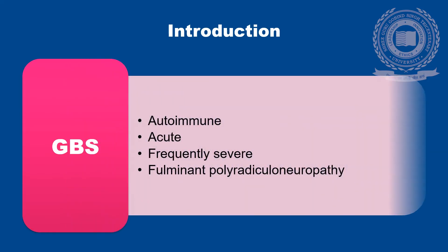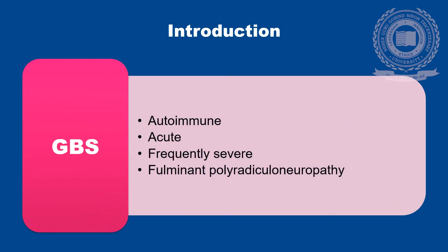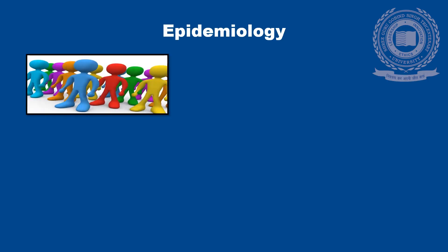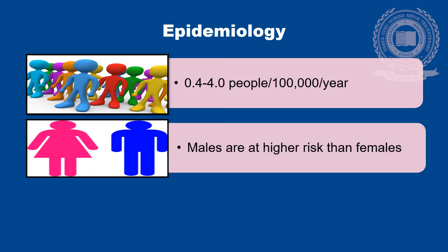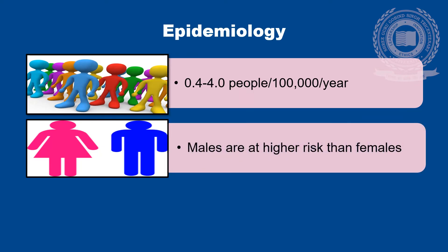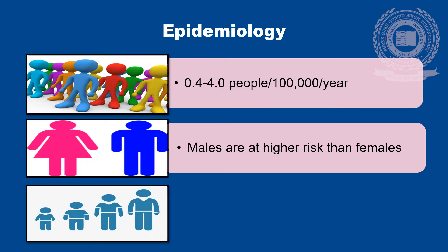Gulenbady Syndrome is an acute, frequently severe, fulminant polyradiculoneuropathy that is autoimmune in nature. The prevalence of Gulenbady Syndrome, according to data published by the World Health Organization, is 0.4 to 4 people per 1 lakh per year. Both males and females are affected, but males are at a higher risk than females.